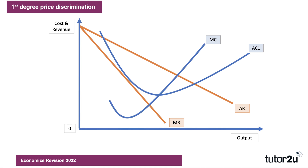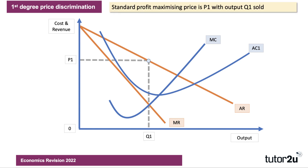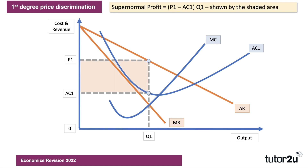Let's just work through the analysis diagram. It uses standard cost and revenue curves. We have a downward sloping demand curve AR and MR, and the usual short-run cost curves. The standard profit-maximizing price is P1 with output Q1, because that's where marginal cost meets marginal revenue. At that price the average cost is AC1, so you can make a good profit shown by the shaded area.